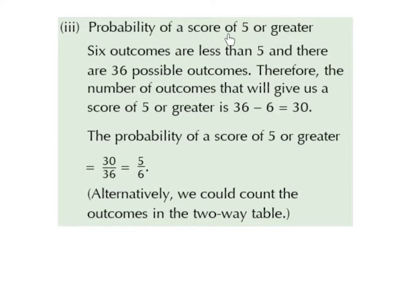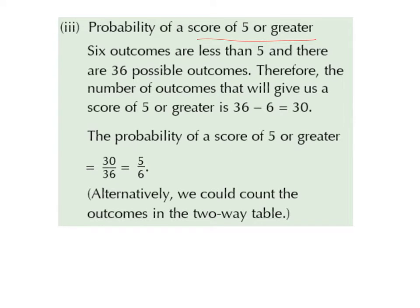The probability of getting a score of 5 or greater. We worked out in part 2 that there were 6 outcomes that are less than 5, and there are 36 possible outcomes in total. Therefore, the number of outcomes that will give us a score of 5 or greater is 36 minus 6, which is 30. So the probability of a score of 5 or greater is 30 over 36, which is 5 over 6. Alternatively, we could count the outcomes in the two-way table.